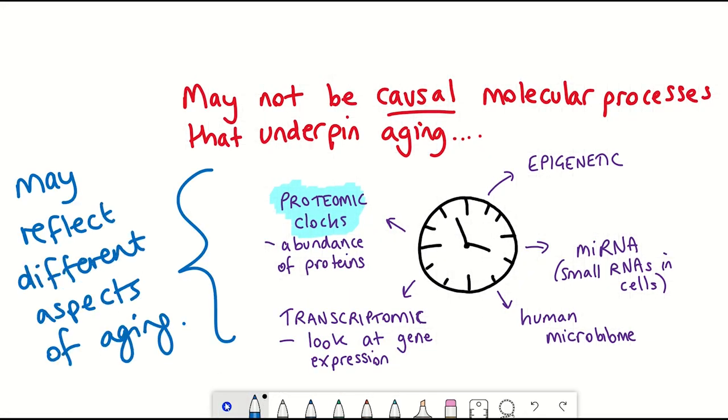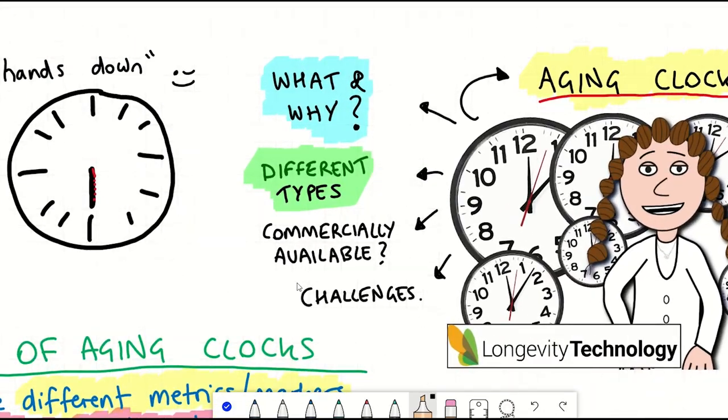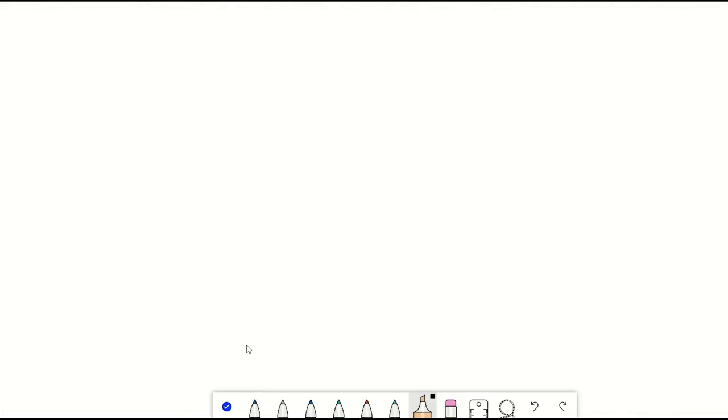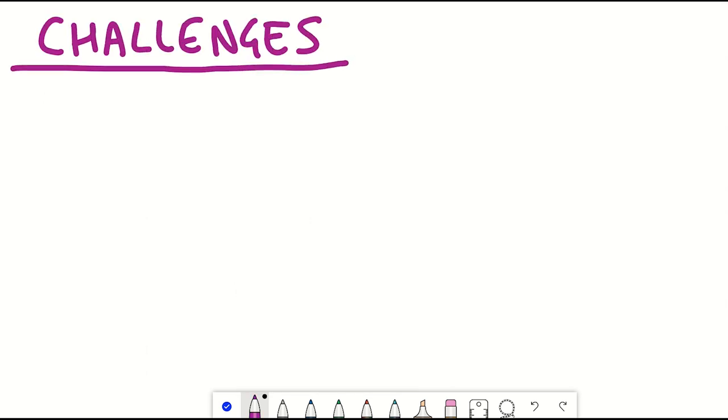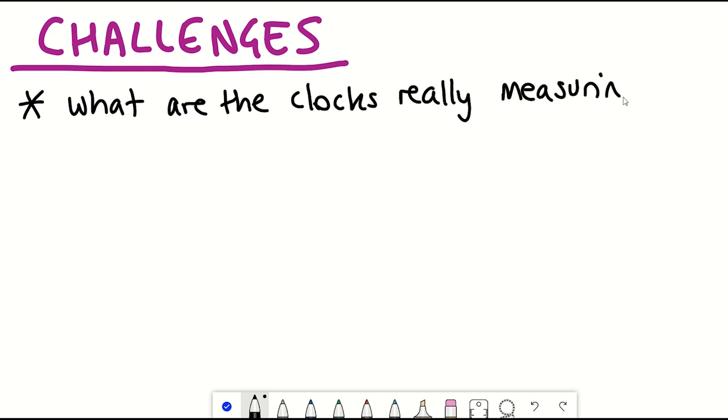And so this kind of leads on to the next section, which is what are the major challenges for the field at the moment? And that definitely includes being able to use these predictive clocks that have been developed and kind of deciphering them and working backwards to really see what is it they're actually identifying? What is it they're picking up? How does this relate to aging?